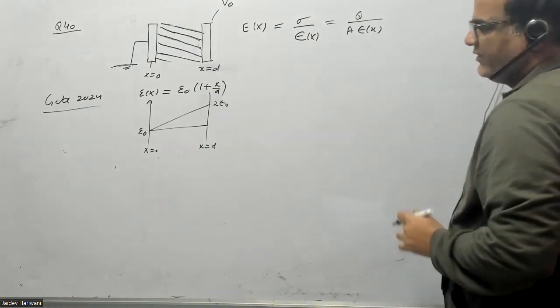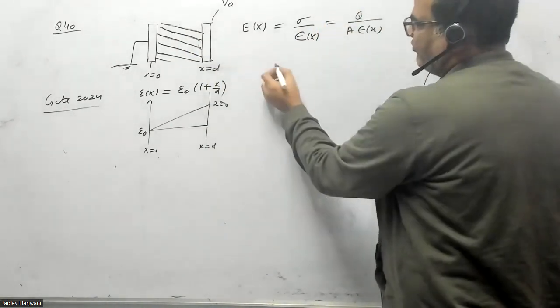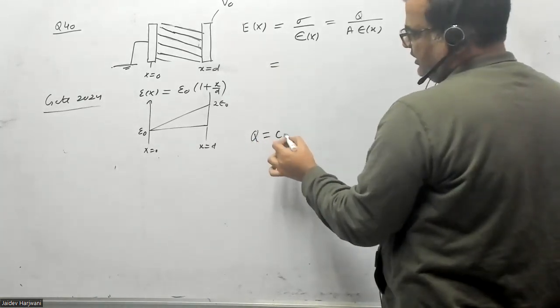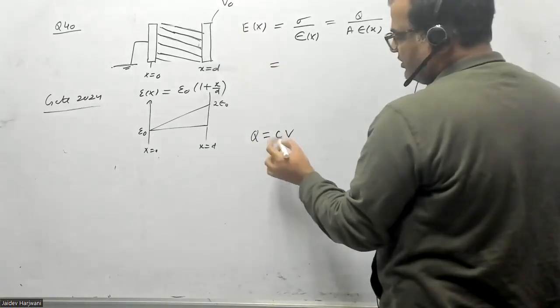Now I have to find this Q. In order to find the Q, we know Q equals CV. Voltage is given as V naught, so the difference of voltage is V naught here.